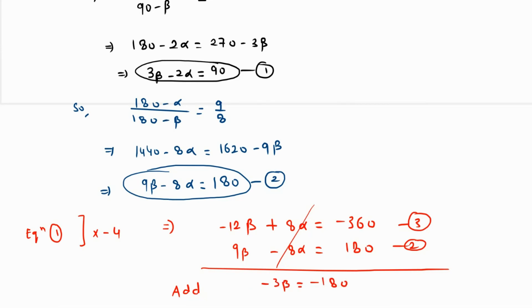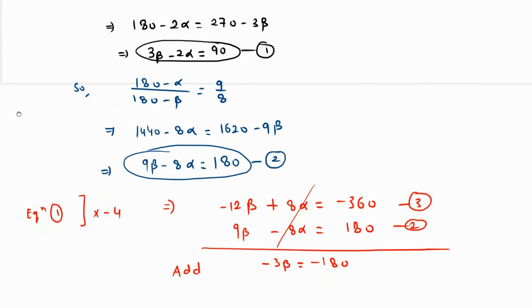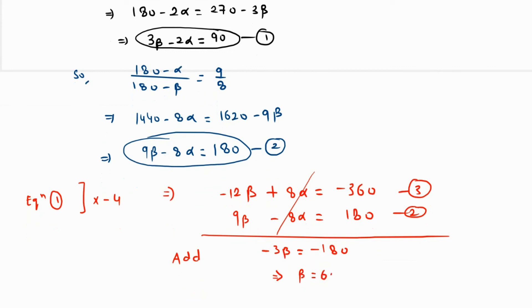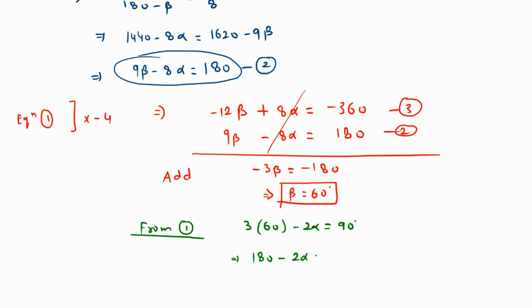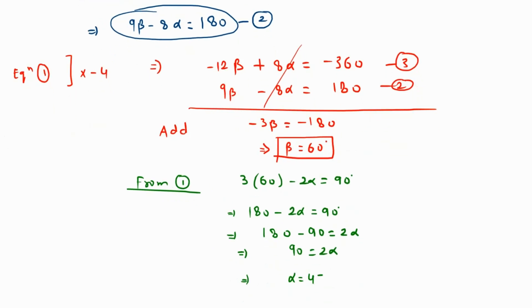This equals minus 180. Dividing both sides by minus 3, beta equals 60 degrees. Substituting back into equation 1: 3 times 60 minus 2 alpha equals 90, so 180 minus 2 alpha equals 90. Adding 2 alpha to both sides and subtracting 90, we get 90 equals 2 alpha, so alpha equals 45 degrees. The two angles are 45 degrees and 60 degrees.